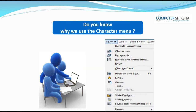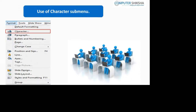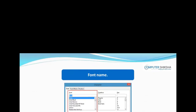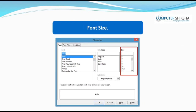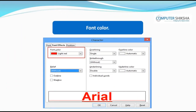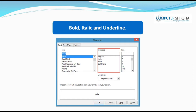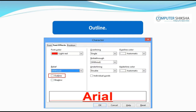Do you know why we use the Character Menu? With the Character Menu, you can do all types of formatting on your text or paragraph — like font name, font size, font color, bold, italics, underline, outline, shadow, and more.